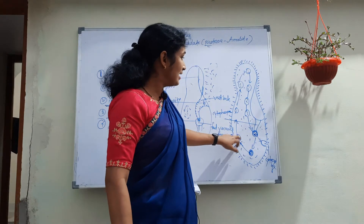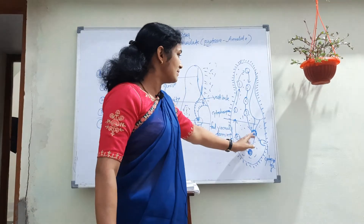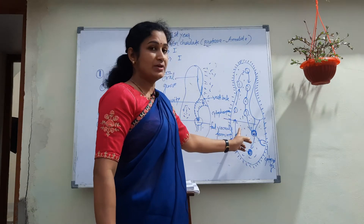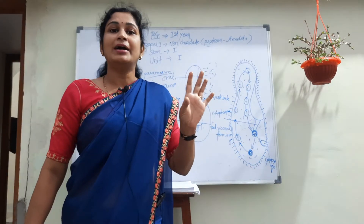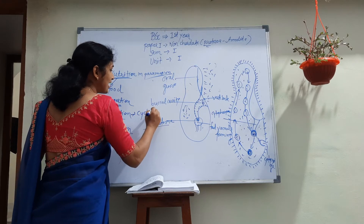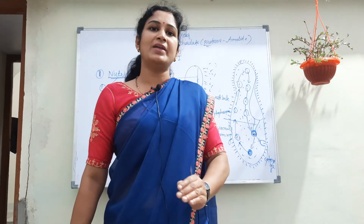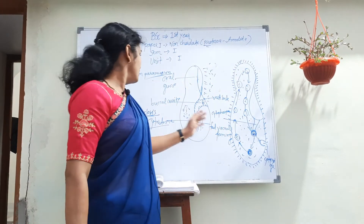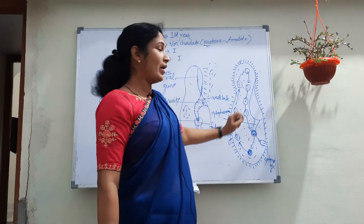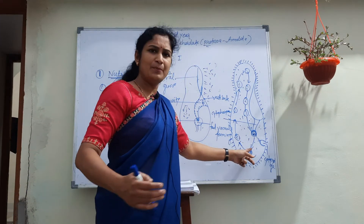This slow streaming movement of the endoplasm, through which the food vacuoles are moved forward, is called cyclosis. Cyclosis is the streaming or slow movement of the endoplasm. Through cyclosis, food vacuoles move slowly, and these food vacuoles also contain food particles.